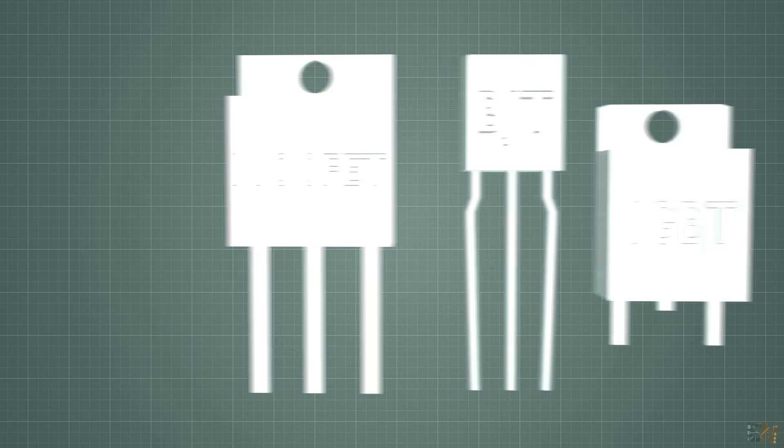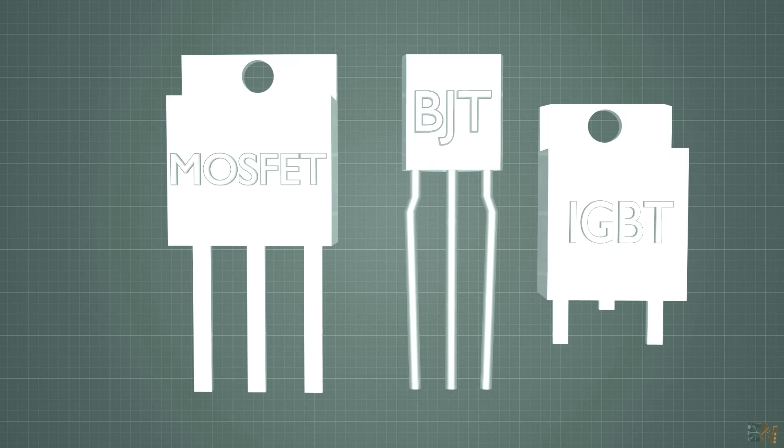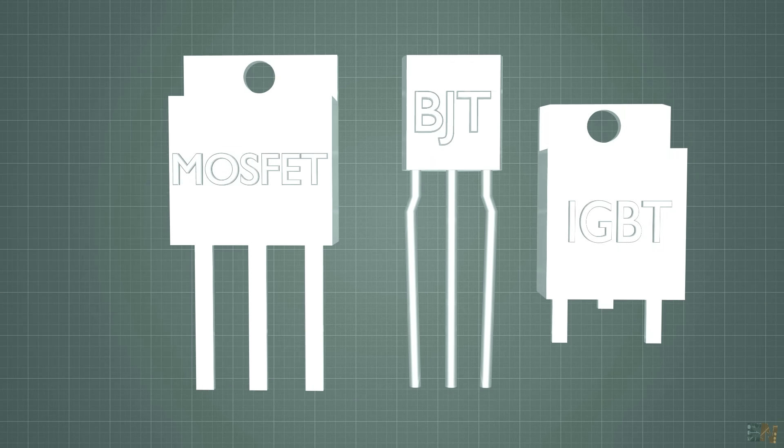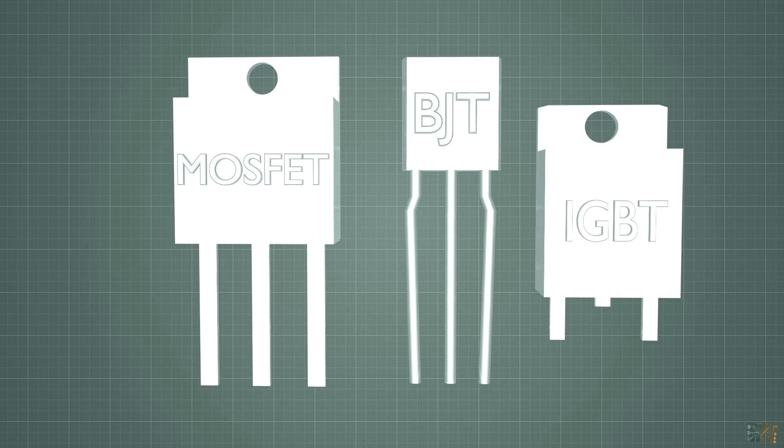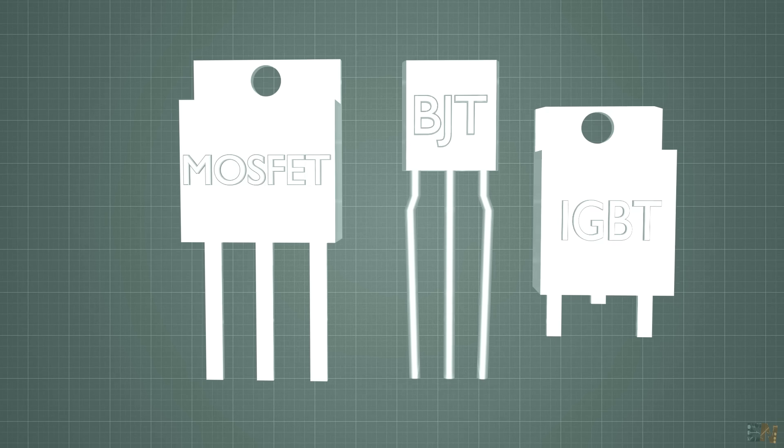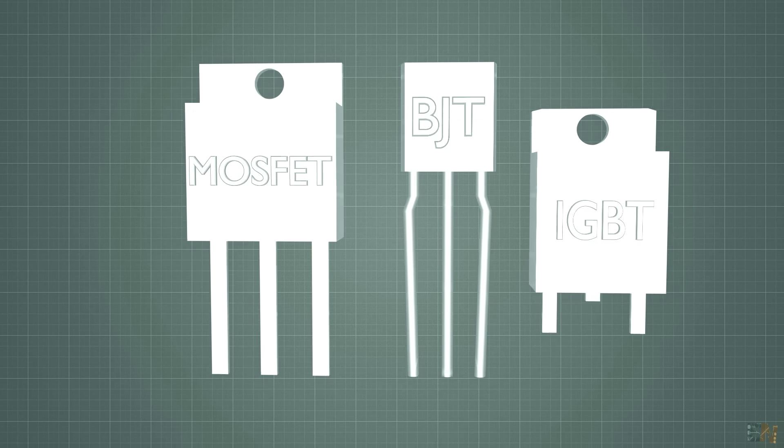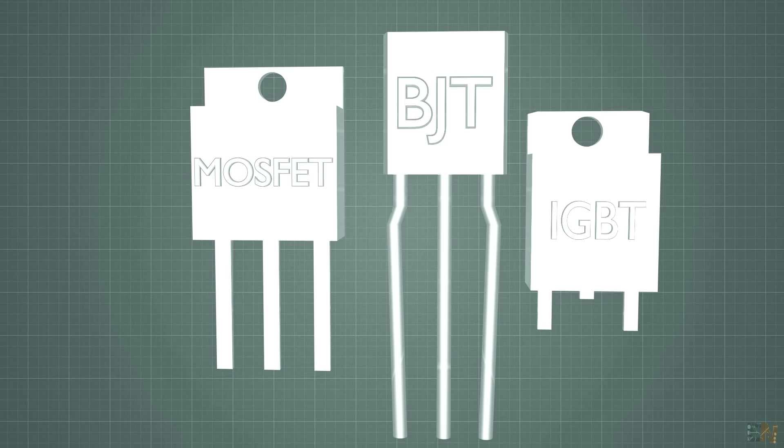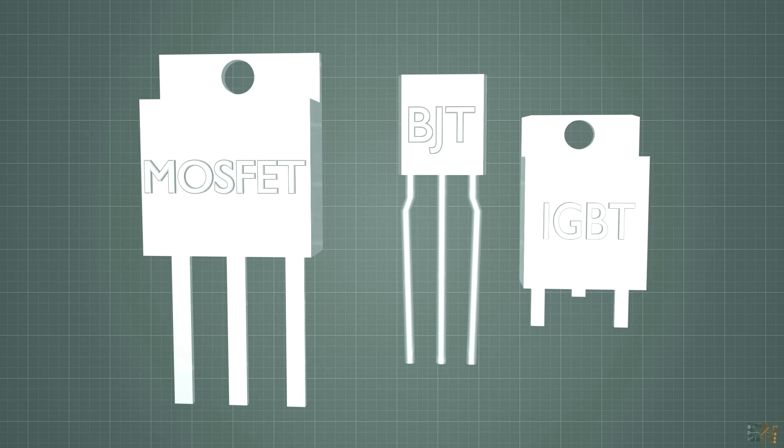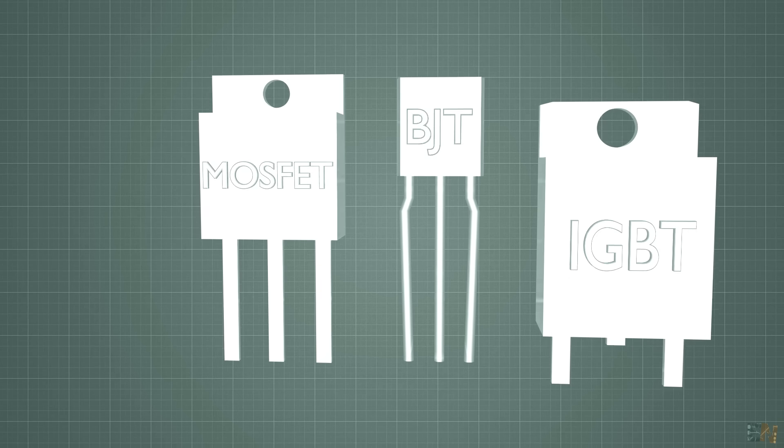Finally, but not the least important, as a designer you must have in mind the cost. This could change depending on the quantity that you want to buy, but usually for low quantities, the BJTs are very cheap. Then the MOSFETs are medium price and usually IGBTs are a little bit more expensive.